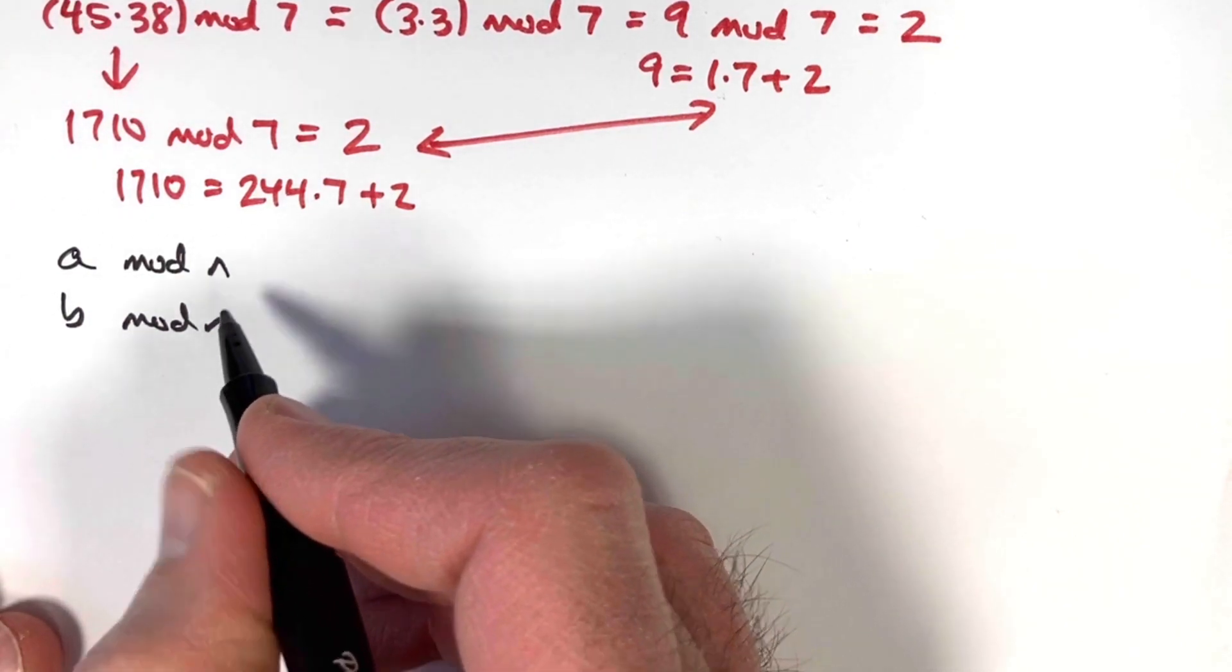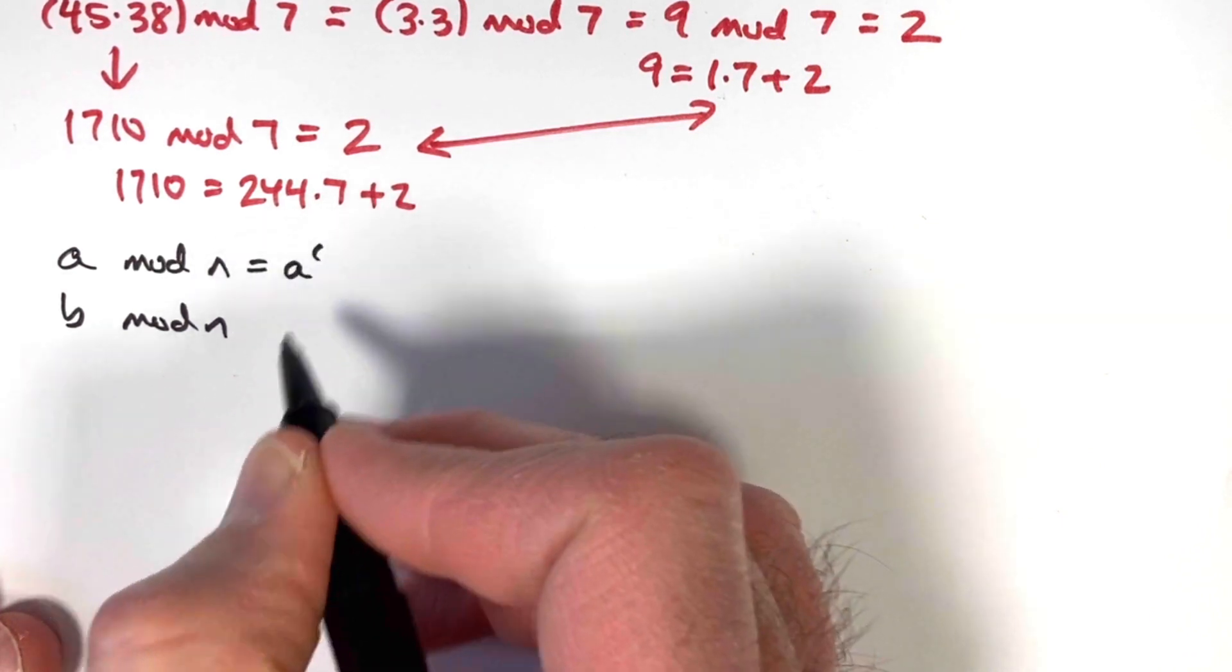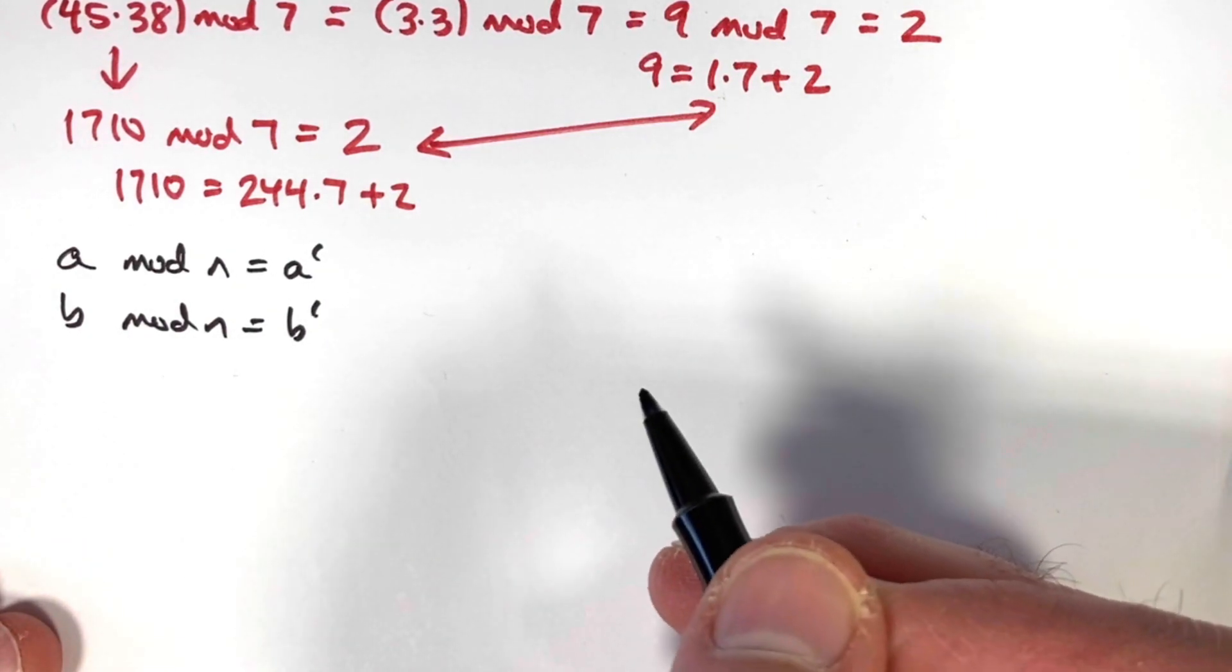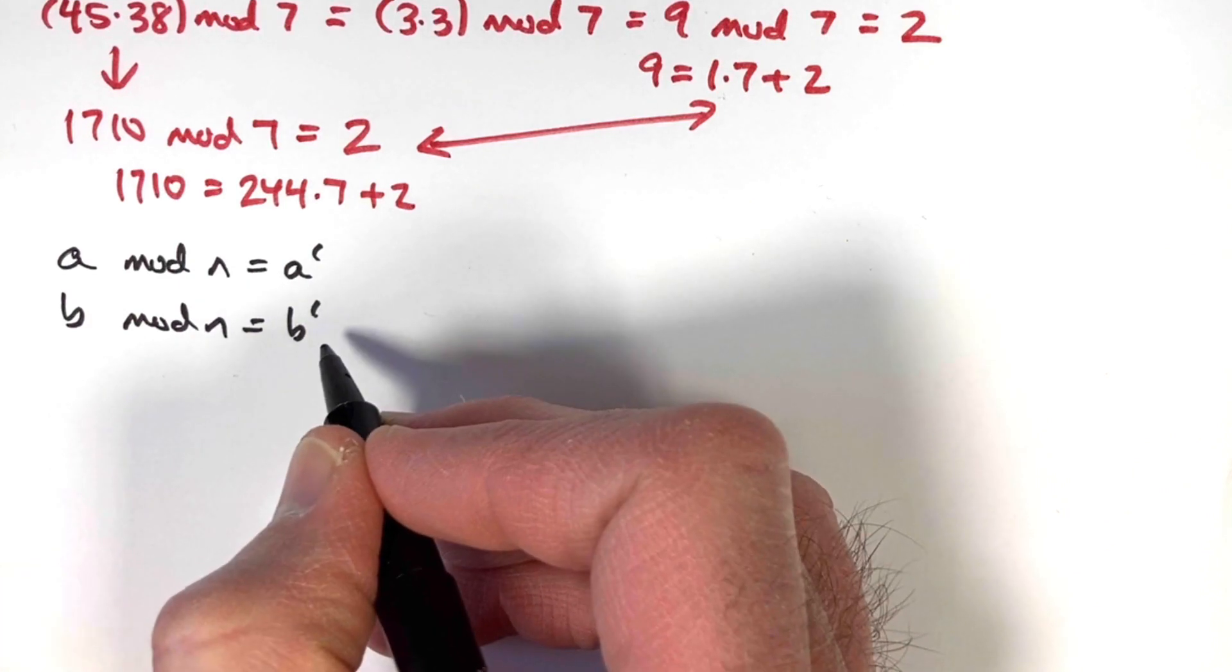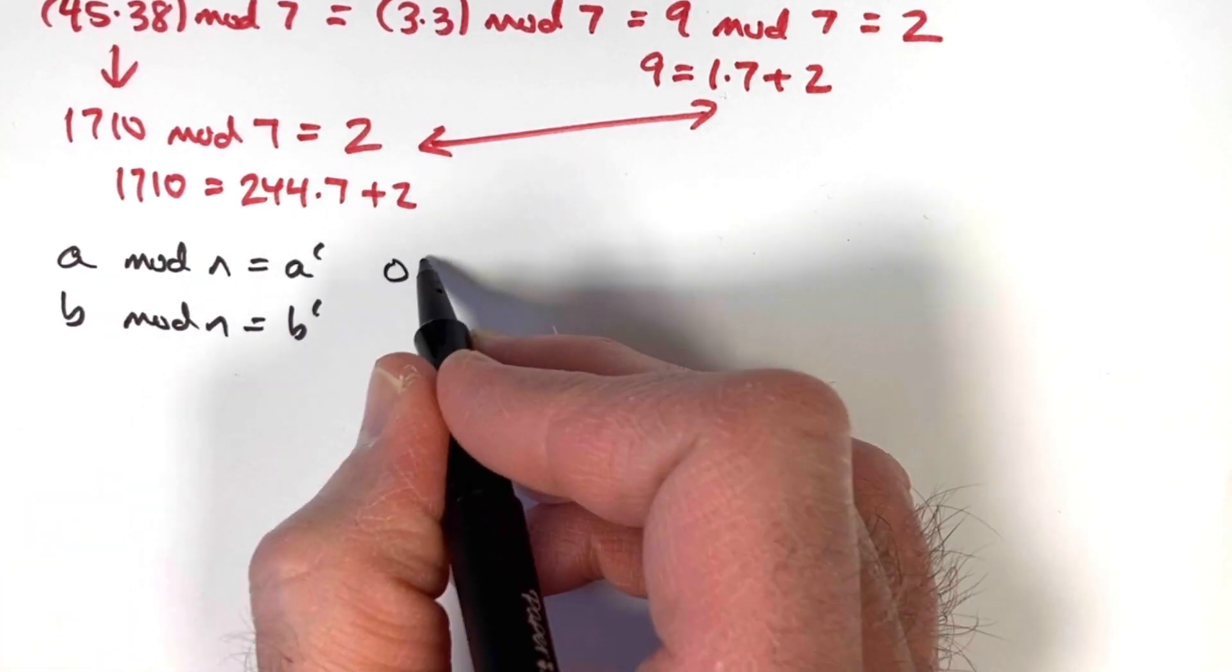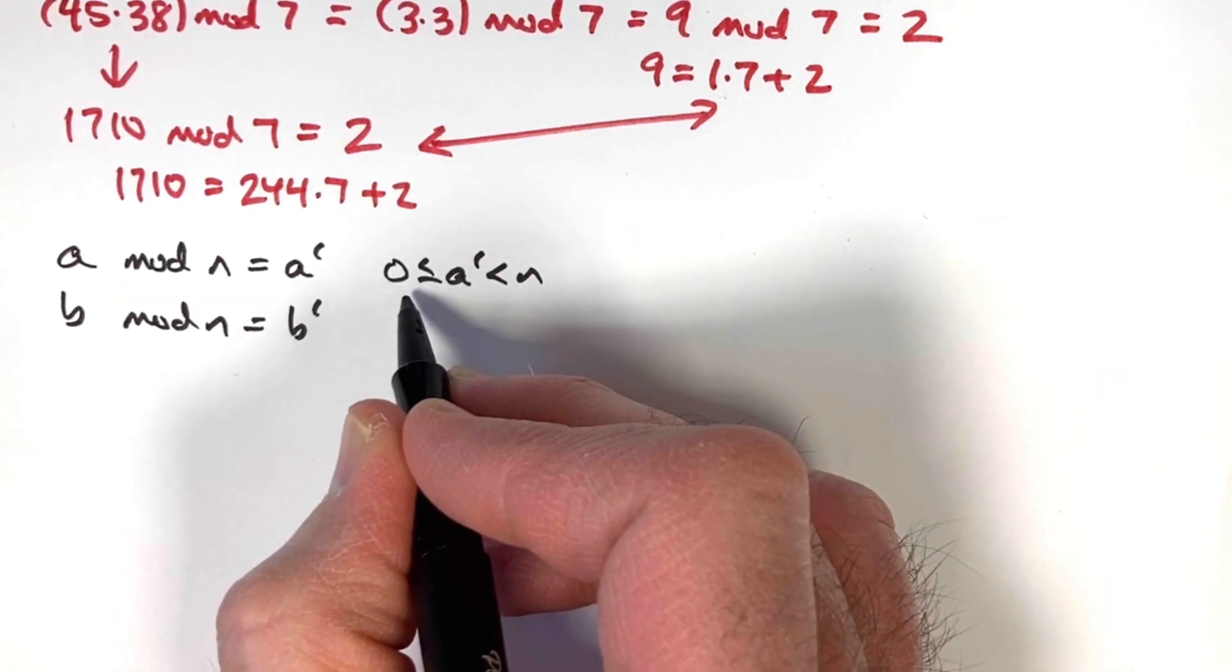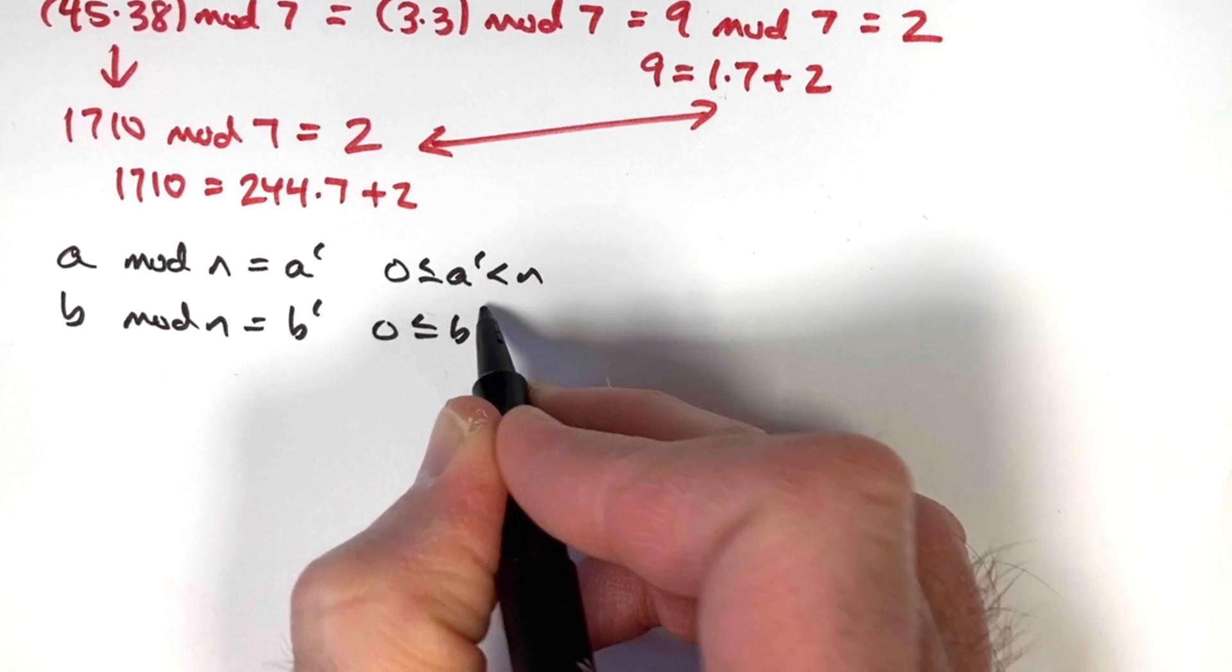Since these are arbitrary numbers, I don't know exactly what they equal. Let's just say this one equals some number, call it a prime, and this one equals some other number, call it b prime. These are the remainders that I get when I divide these numbers by n. By definition, it is important to note that remainders must be between 0 and n, possibly including 0, but not including n. That's true in both cases.